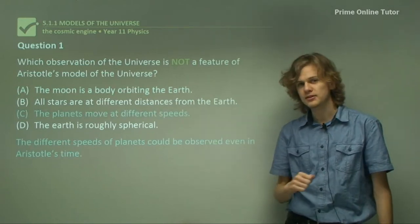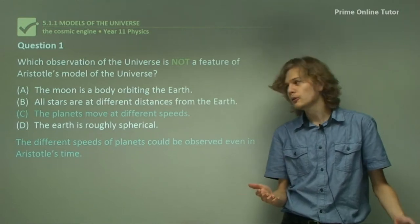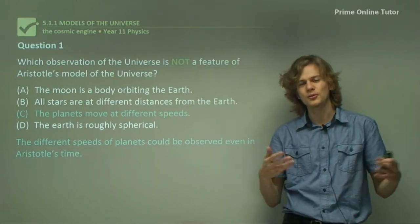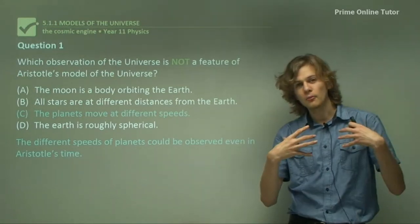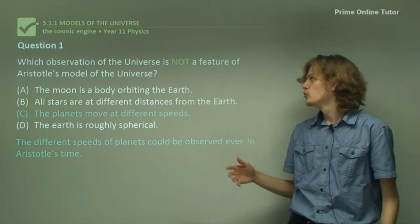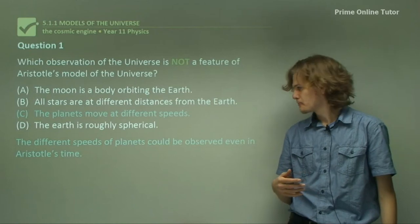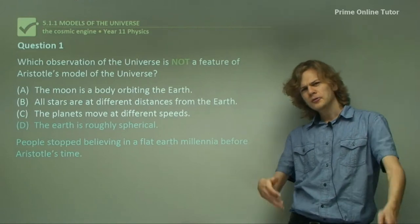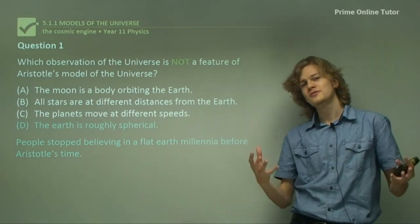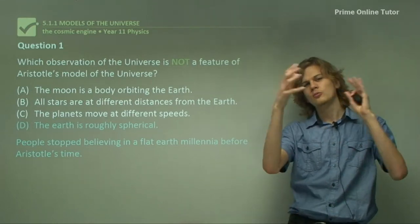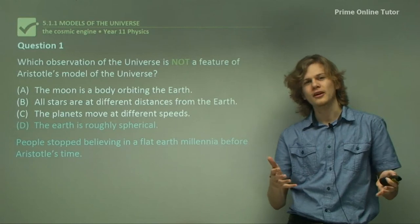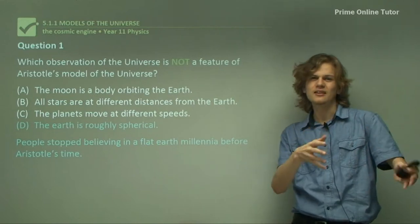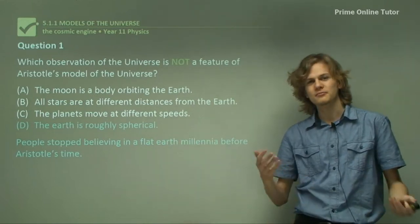How about C. The planets move at different speeds? Well, we know from Aristotle's model that the different speeds of the planets could be attributed to the different speeds of these celestial spheres that he believes surround the Earth. So in both our model and Aristotle's model, the planets move at different speeds through the cosmos. Is it D? The Earth is roughly spherical. Aristotle believed that the Earth and the planets were perfect spheres. We now know that this is not the case, but we still think that the Earth is roughly spherical. So this is an observation that's maintained by both.